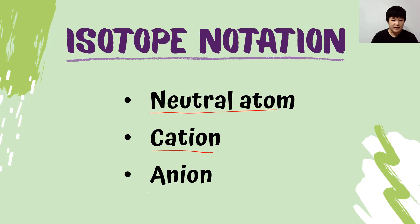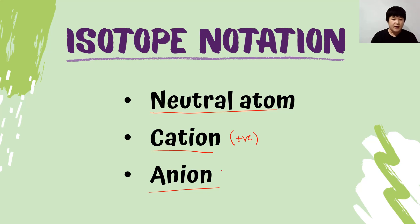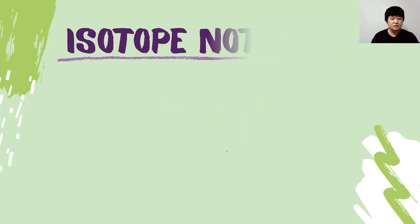In the previous video we learned that a cation is a positively charged ion formed by losing electrons, and an anion is a negatively charged ion formed by accepting electrons.